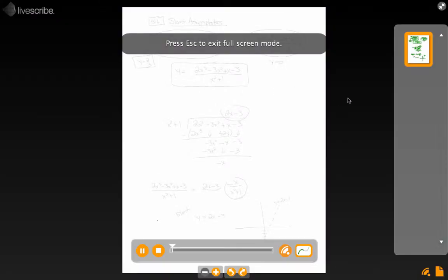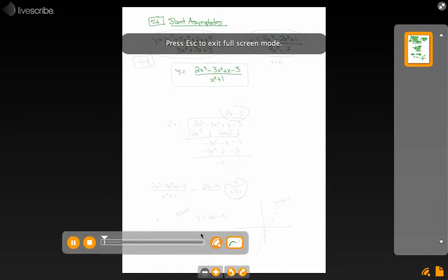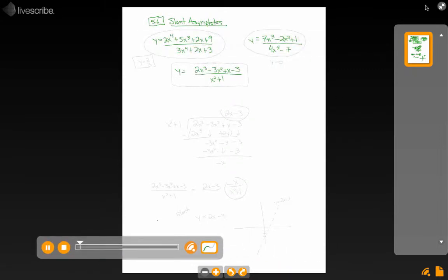This comes out of section 5.6, slant asymptotes. So I've written three different rational functions here, and I just want to talk about the difference between them. They have many differences, but the biggest thing that I want to look at is talking about asymptotes.